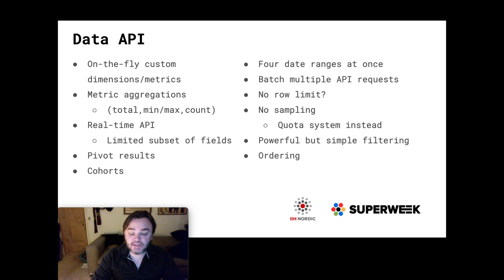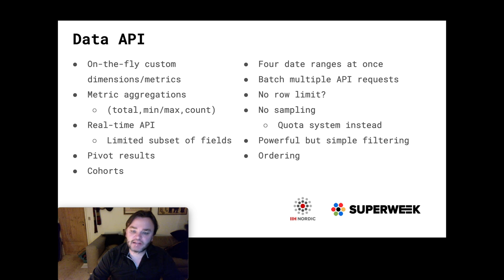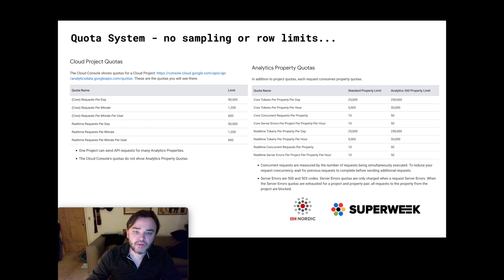The filtering is much nicer to work with. The filters in the last API were a bit of a head-scratcher with the clauses and nested structure, but they're a lot more simple now - a result of the new data model. We've also got ordering of results. And there's no sampling, which is great. But there is this quota system - everyone moaned about sampling and now they're probably going to moan about the quota system instead.